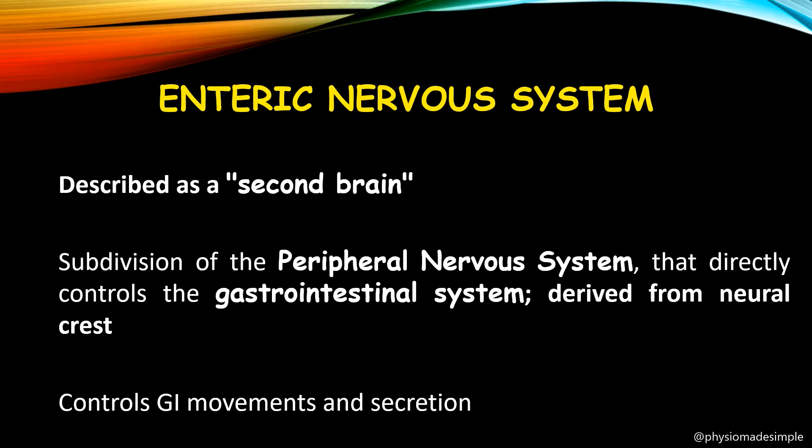One important movement is called peristalsis. Peristalsis is one of the most important movements in the gastrointestinal tract, helping to propel food along. The enteric nerves control these movements. Additionally, the stomach produces gastric juice and the small intestine produces its own secretions — these secretions are also controlled by the enteric nerves.